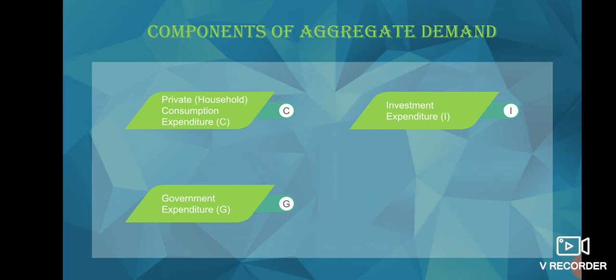The next component of aggregate demand is net exports. There are four sectors of the economy: household sector, firms, government sector, and the rest of the world. The rest of the world component is import and export—exports minus imports, where X is for exports and M for imports.